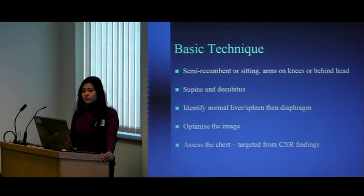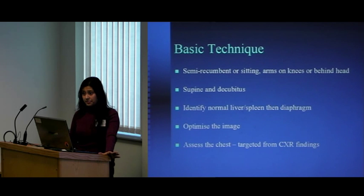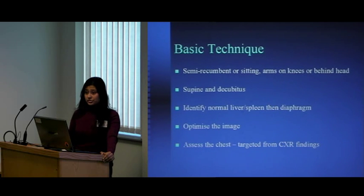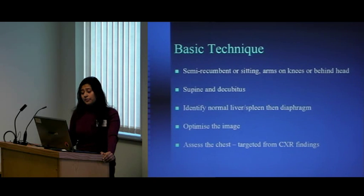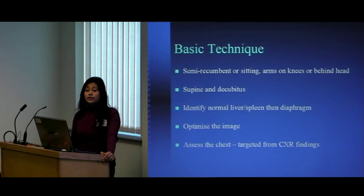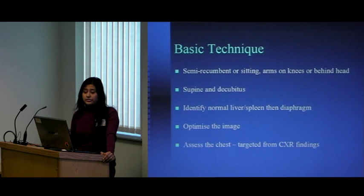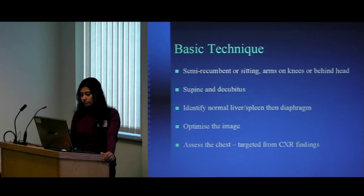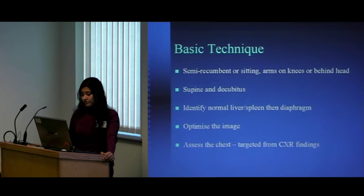Optimize your image — three buttons are important: focus, gain, and depth. The depth button allows you to increase depth to see deeper structures or reduce it to see superficial structures like the chest wall and pleura. Bring the focus down to the area of interest for the best image. The gain button allows you to adjust image contrast. Once you've done all that, remember the chest X-ray findings and target the chest using those X-ray findings.